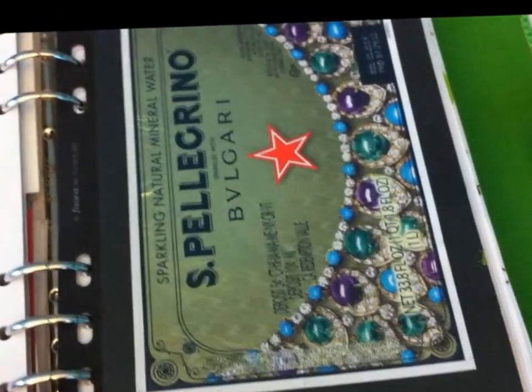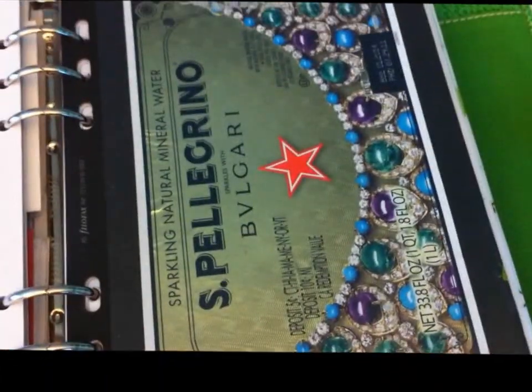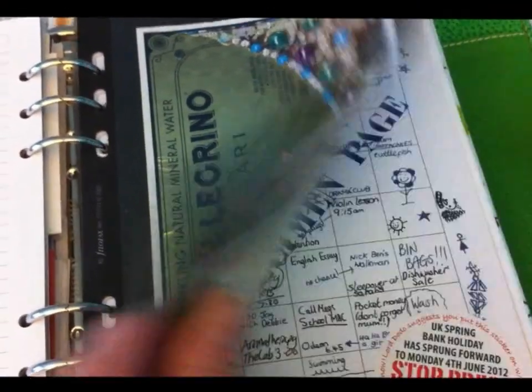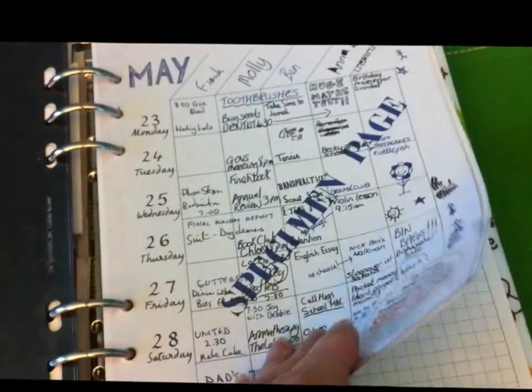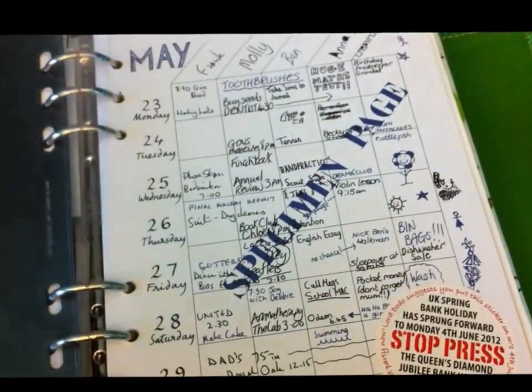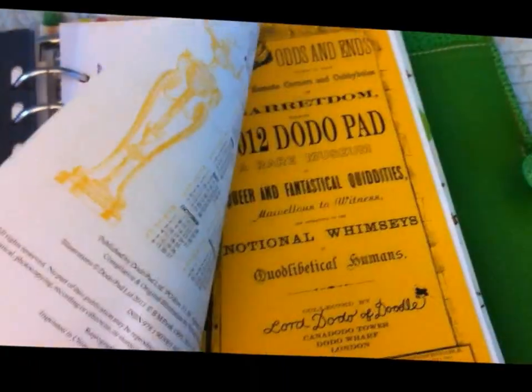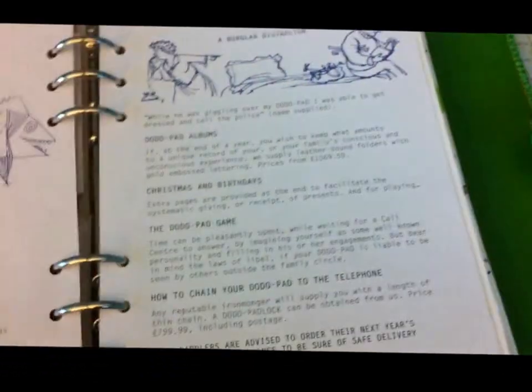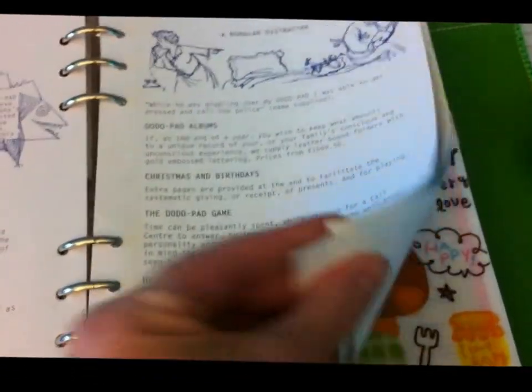I know I've shown this before, this is the label for a San Pellegrino water bottle and I just put it in here. These are my Dodo sheets. I really still like them a lot.